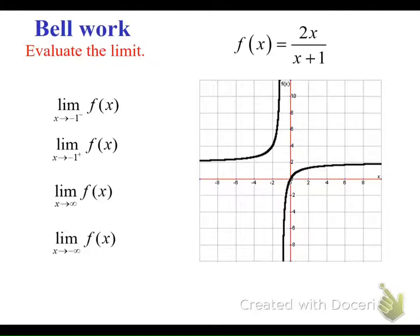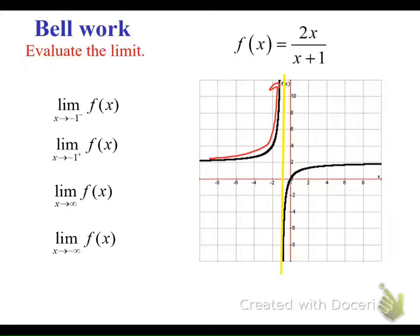So hit pause. Okay, so at negative 1, there appears to be a vertical asymptote. As you approach a vertical asymptote, as your graph approaches that asymptote, it's either going to go up to infinity or down to negative infinity. For this one, as we approach negative 1 from the left, it goes up to infinity. And as we approach negative 1 from the right, it goes down to negative infinity.